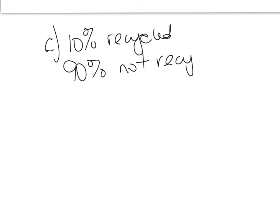Let's go ahead and solve C. Assume the average mass of each mobile device was 0.1 kilogram. The U.S. Environmental Protection Agency estimates that 10% of mobile devices in 2007 were recycled. Calculate the mass in kilograms of the mobile devices sold in 2007 that were not recycled. So if 10% were recycled, then we know 90% were not recycled.